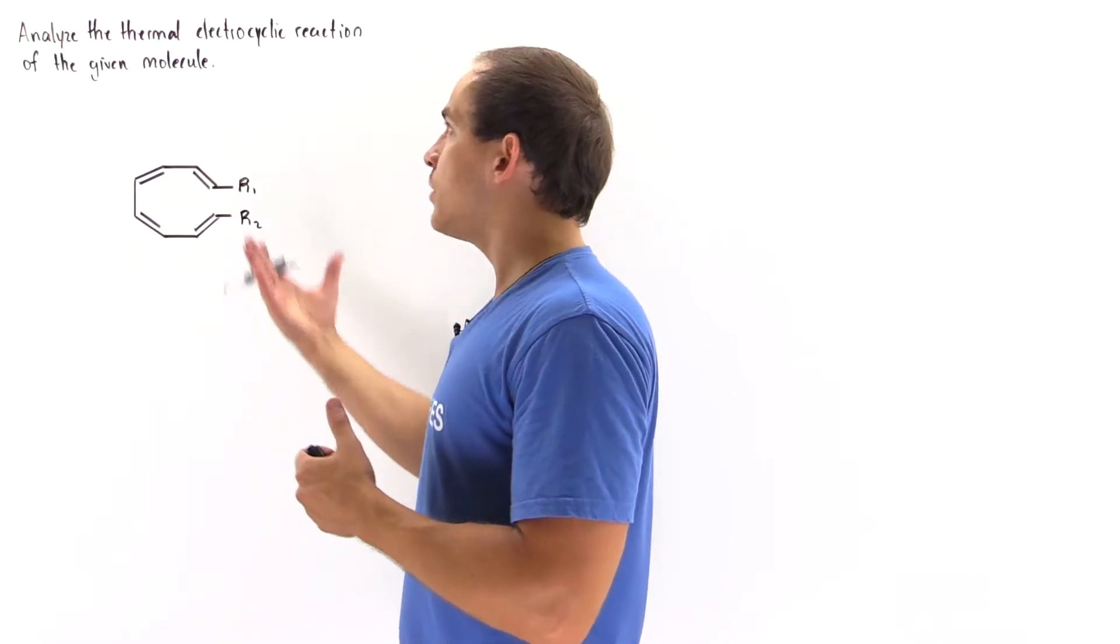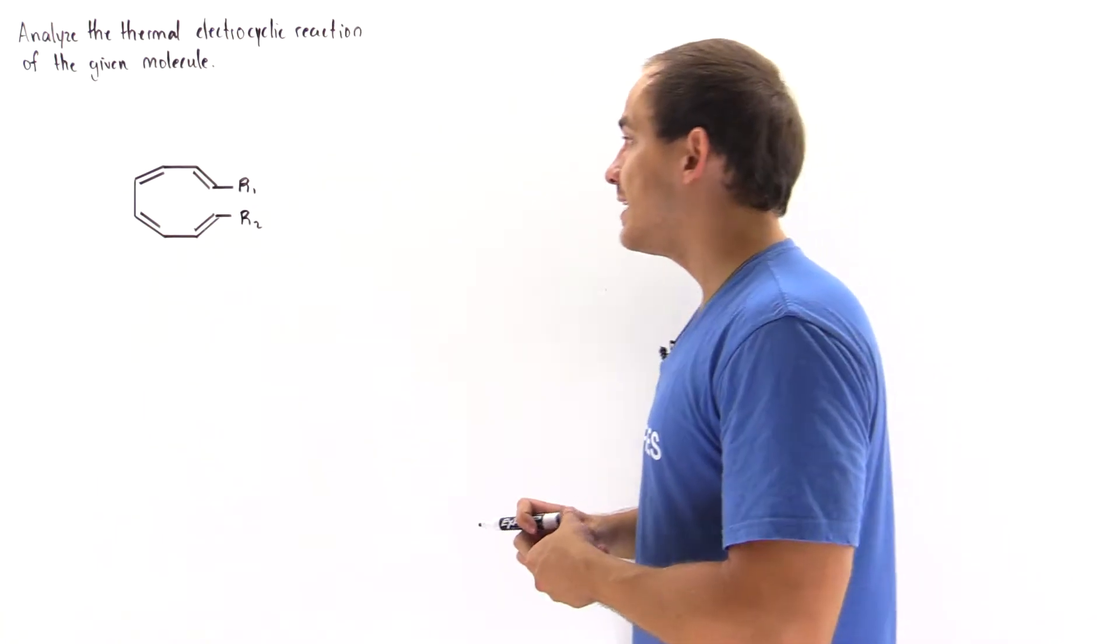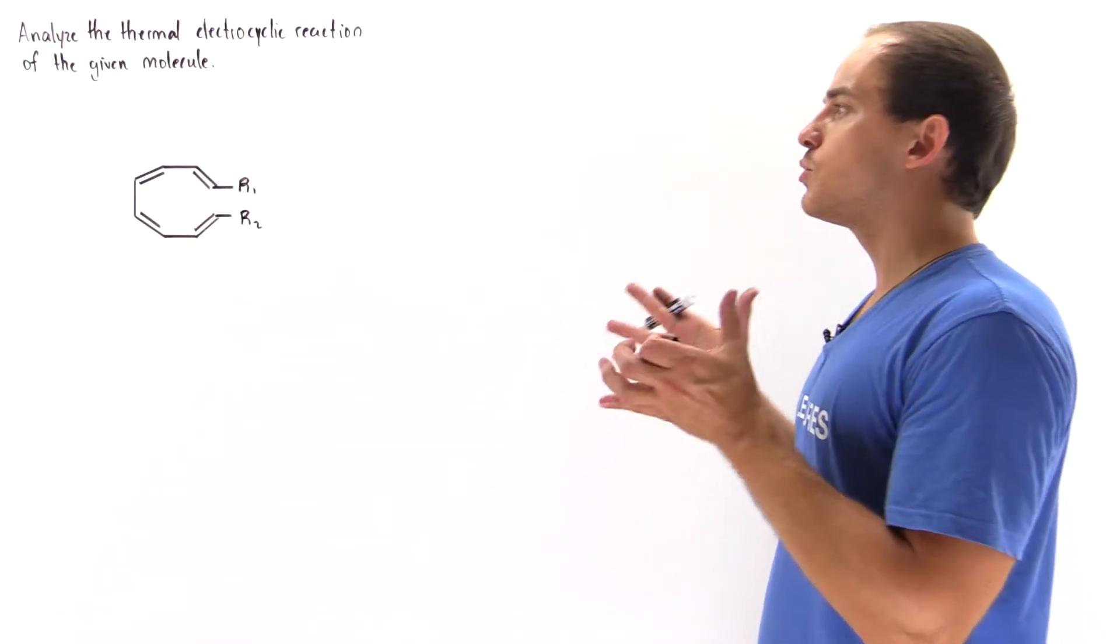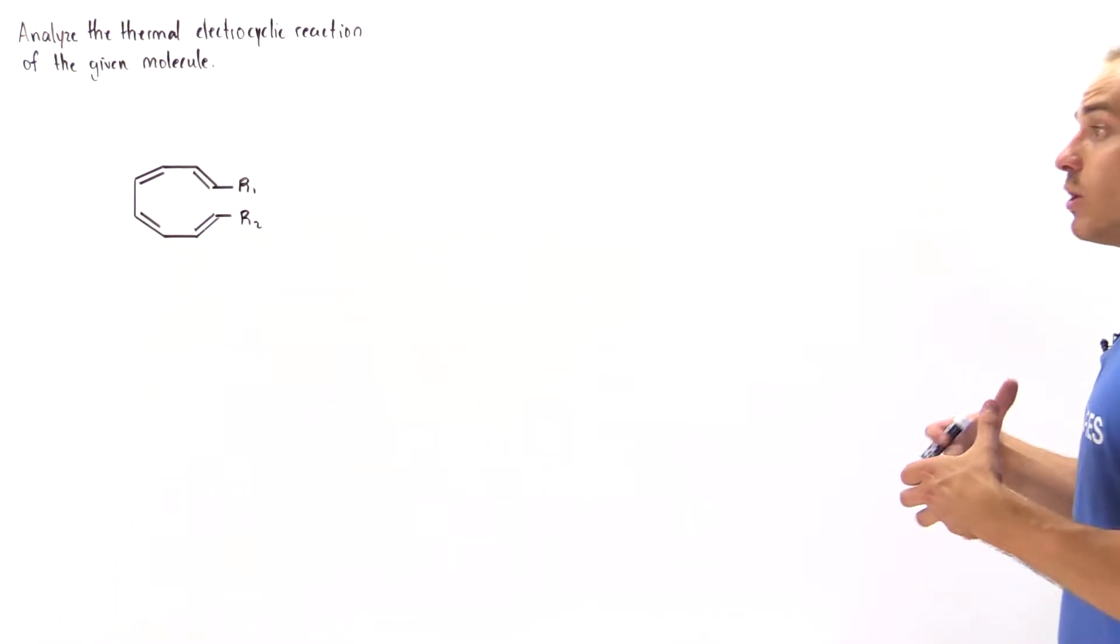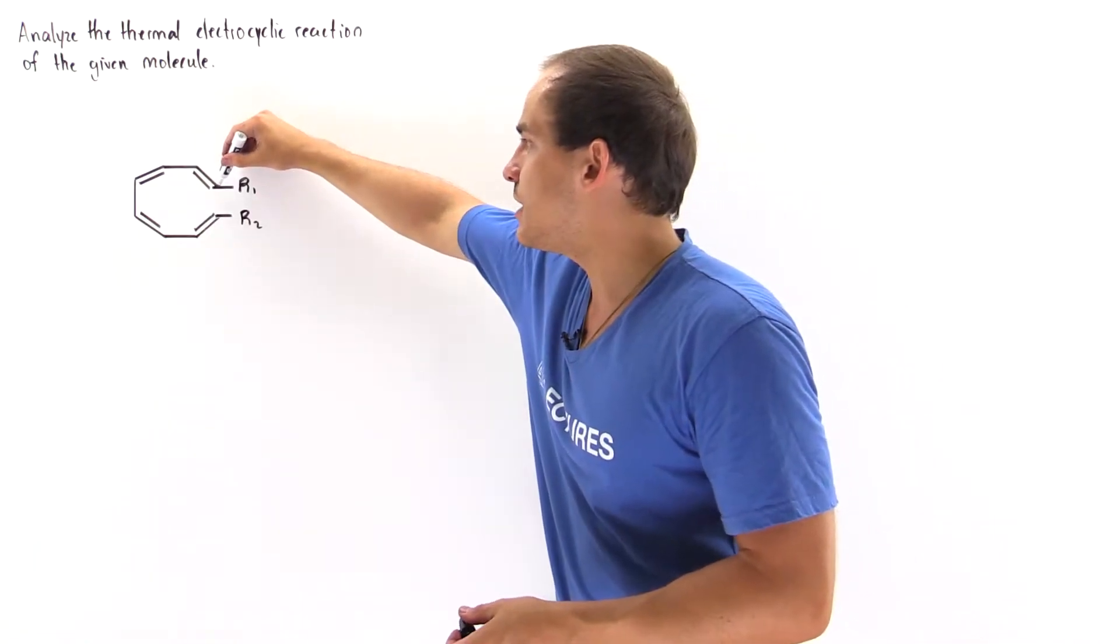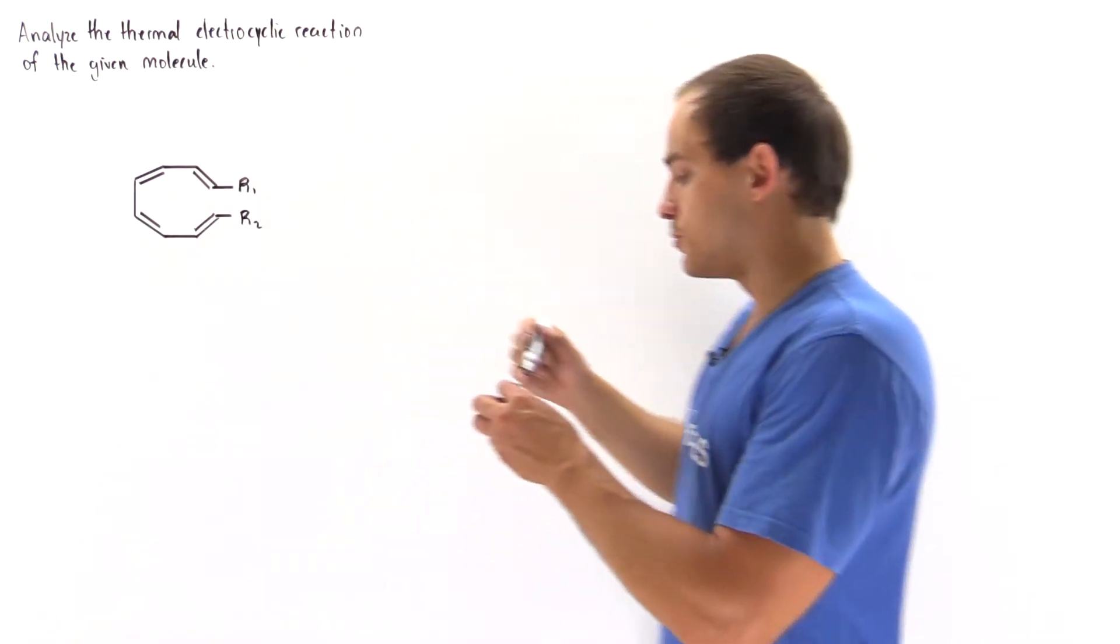Now we know that the reaction is under thermal conditions, so the energy source is heat. We want to determine what product is formed, what the isomer is. Is it trans or is it cis with respect to these two R groups?